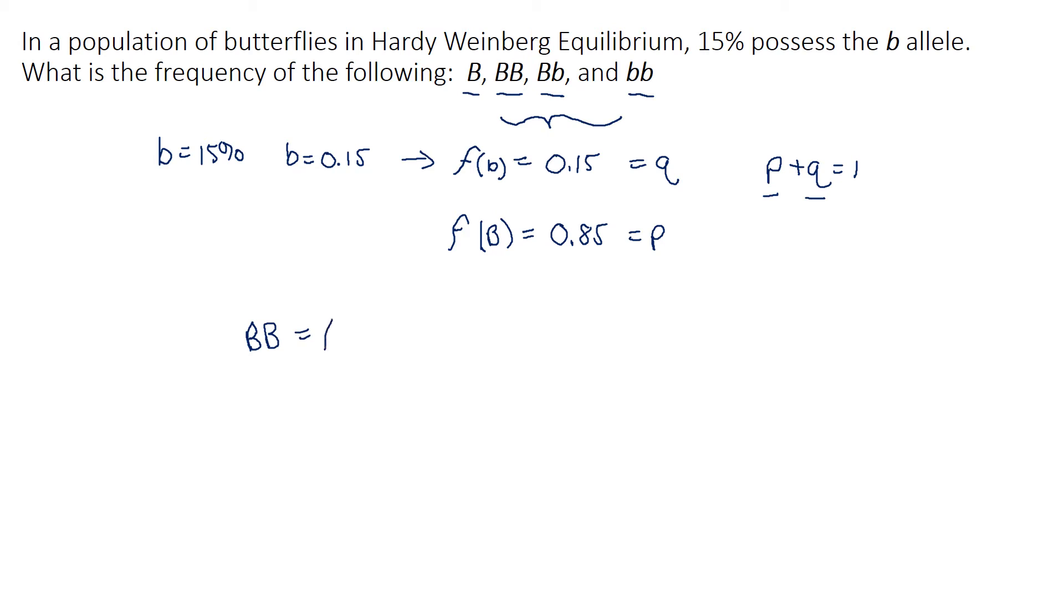So now we know P and Q, we can easily find the genotypes. So we have the homozygous dominant, which is, in relation to the Hardy-Weinberg equation, that's actually P squared, which is equal to P times P. So if we know what P is, we can find P times P. We've got 0.85 squared, and then our answer.